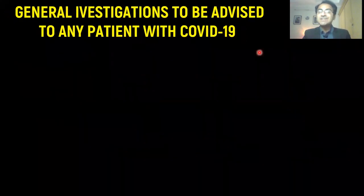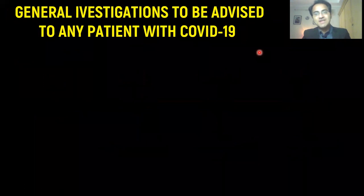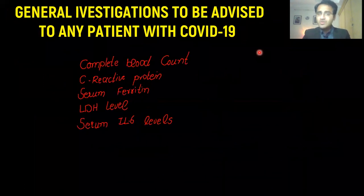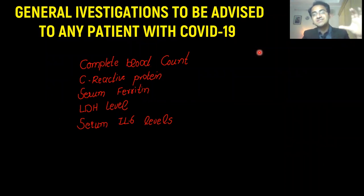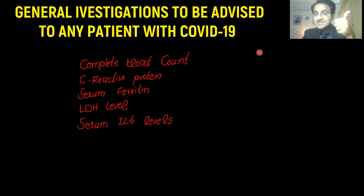What investigations need to be performed in a COVID-19 patient? You have to perform a complete blood count and look for WBC count specifically. You have to do C-reactive protein, serum ferritin level, LDH level, and serum IL-6 levels. These are all inflammatory mediators that will be elevated, showing the inflammation and the prognosis of the patient. Especially elevated IL-6 and serum ferritin levels are important prognostic factors for a patient with COVID-19.